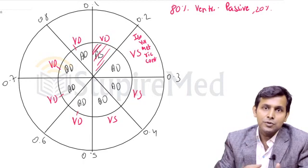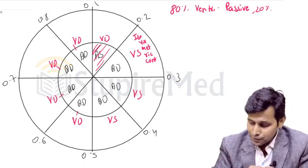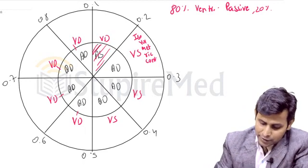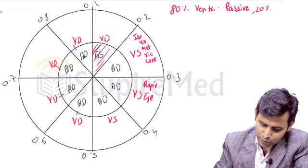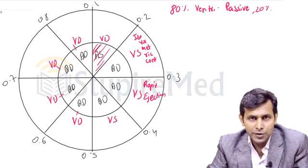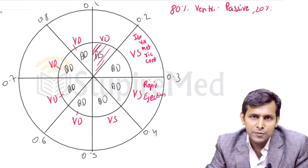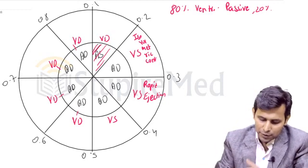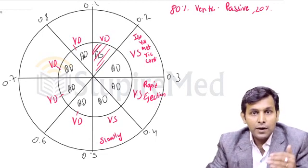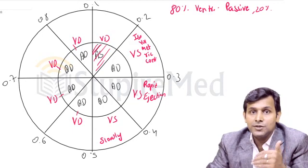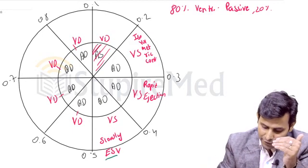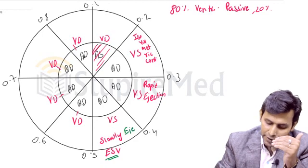The advantage of isovolumetric contraction is that it leads to a rapid and tremendous increase in pressure. The moment ventricular pressure increases beyond aortic pressure, the aortic valve opens and there is a rapid ejection phase — blood rapidly moves from ventricles into the aorta. Initially the blood goes rapidly and then slowly, so there is a rapid ejection phase followed by a slow ejection phase. The amount of blood remaining in the ventricles after the slow ejection phase is the end-systolic volume.